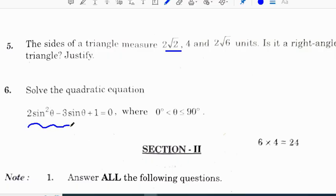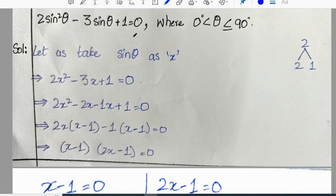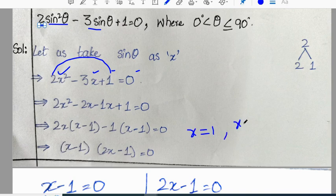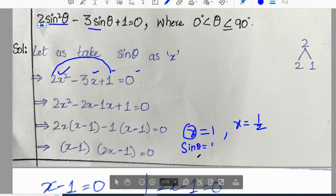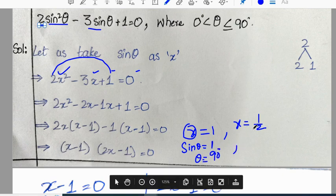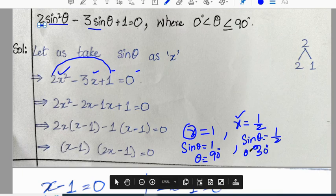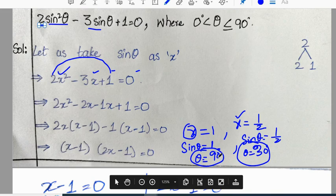For the quadratic equation 2sin²θ - 3sinθ + 1 = 0, solve for θ. If we assume sin θ as x and replace x wherever sin is there, we get 2x² - 3x + 1 = 0. This is clearly in the quadratic form. Doing factorization, we get x = 1 and x = 1/2. If x = 1, then sin θ = 1, so θ = 90°. If x = 1/2, then sin θ = 1/2, so θ = 30°. The answer for this question is 30° or 90°.